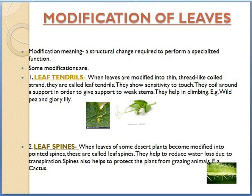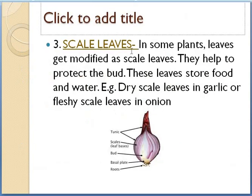The next topic is modification of leaves. What does modification mean? A structural change required to perform a specialized function — it is a necessary change to perform a particular function. There are three modifications of leaf: leaf tendril, leaf spine, and scale leaves.